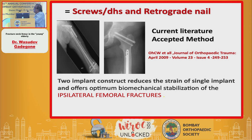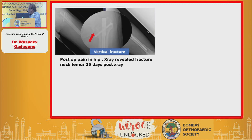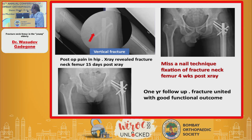The current literature-accepted method is a two-implant construct, which reduces the strain on a single implant and offers optimal biomechanical stabilization of ipsilateral femoral shaft fractures. Here is an example of a missed fracture neck femur not initially revealed — the patient continued to have pain after fixation. The postoperative hip x-ray revealed a fracture neck of femur after 15 days. Fixation was done and the four-week post-op and one-year follow-up showed fracture united with good results.